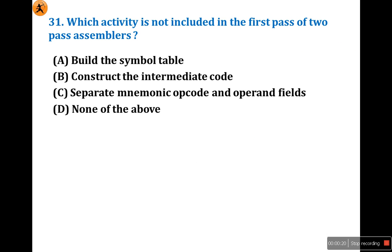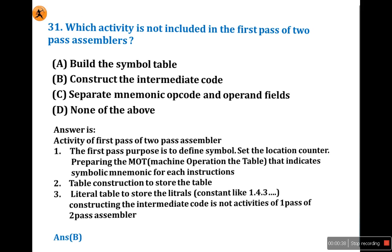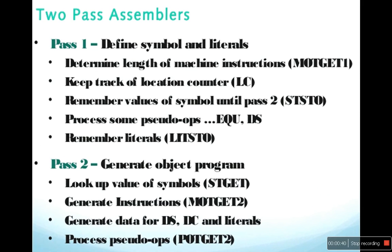In December 2004, UGC NET asked as the 31st question: which activity is not included in the first pass of a two-pass assembler? In system programming, there are three questions based on system programming. First of all we will see both passes of a two-pass assembler. In the first pass, these are the characteristics: define symbol table and literals — define symbols and literals in first pass.